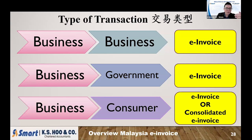Business to government is when your customer is the government — when you sell a product to the government or perform a service to the government, you are also required to issue e-invoice. The third type is consumer, meaning the end user individual. This consumer is not doing business, so it depends on whether they are requesting e-invoice, consolidated invoice, or not.